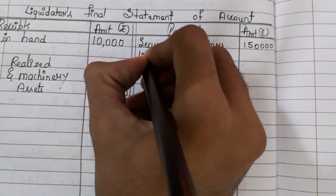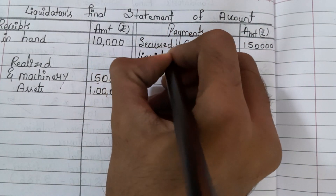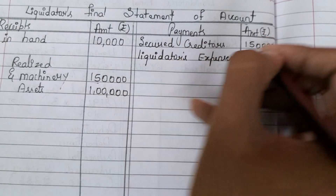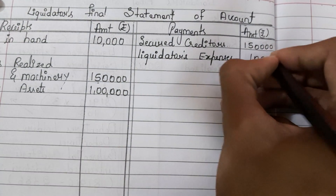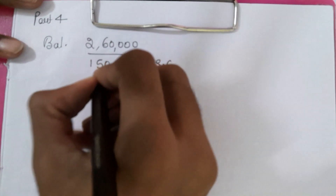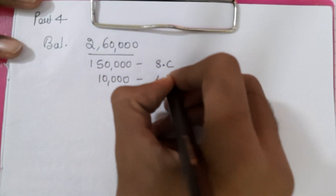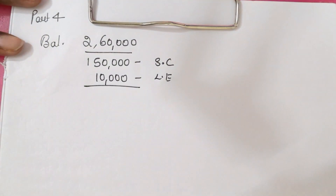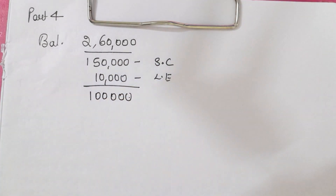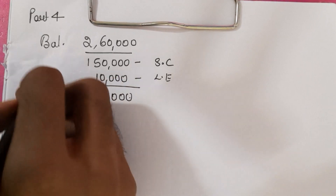Next, liquidator's expenses are ₹10,000. So out of ₹2,60,000, we pay ₹1,50,000 to secured creditors and ₹10,000 as liquidation expenses. When you subtract these from ₹2,60,000 — that is ₹2,60,000 minus ₹1,50,000 minus ₹10,000 — we get ₹1,00,000 as the balance remaining.